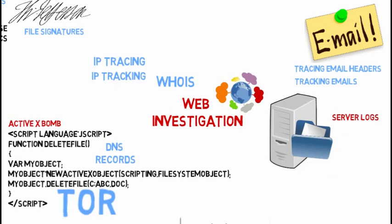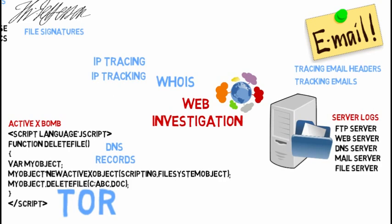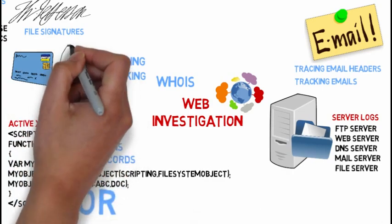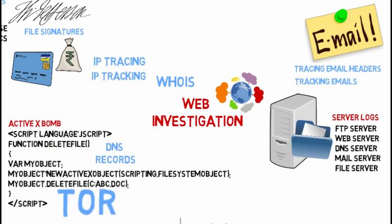Investigating server logs is another very important area — FTP servers, web servers, DNS servers, mail servers, and file servers can all yield interesting evidence. In financial crime investigation, an investigator must know a lot about how the finance industry works — shares, debentures, bonds, commercial paper, treasury bills, promissory notes, derivatives, forwards, futures, and options.